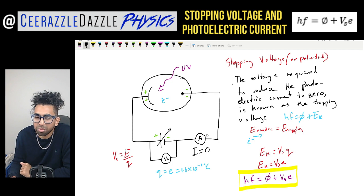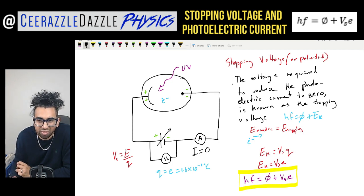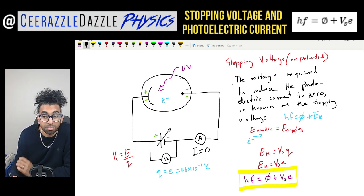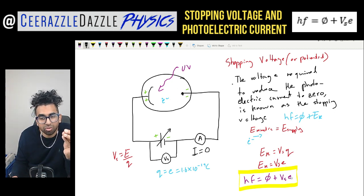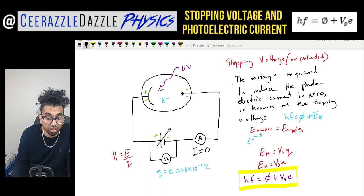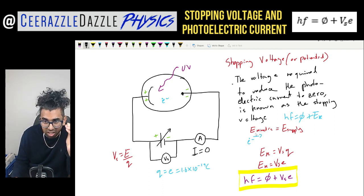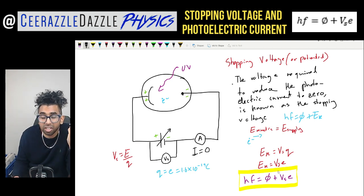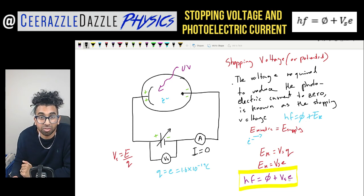Why would you bother with the stopping voltage? By measuring VS and multiplying by the electron charge, you can work out the kinetic energy of the electron — which is really difficult to determine otherwise. So the kinetic energy of the electron is given by the stopping voltage times the charge of the electron.